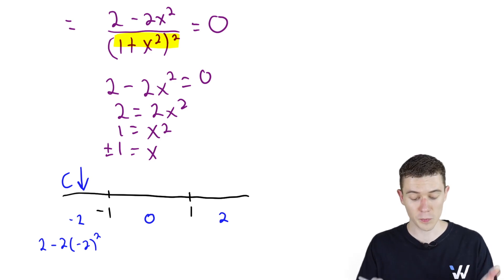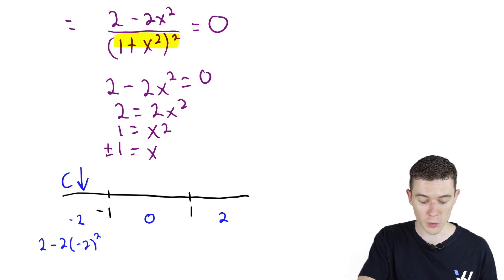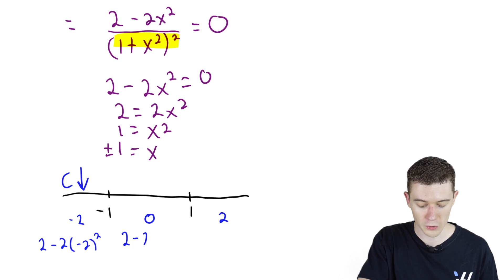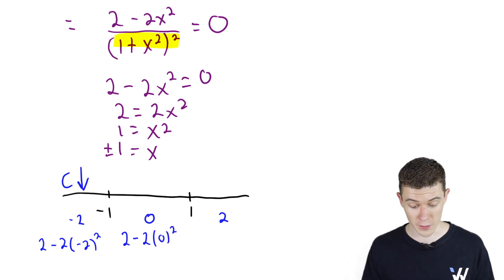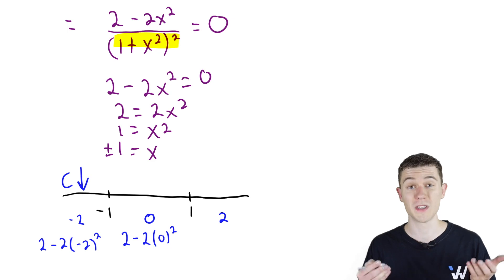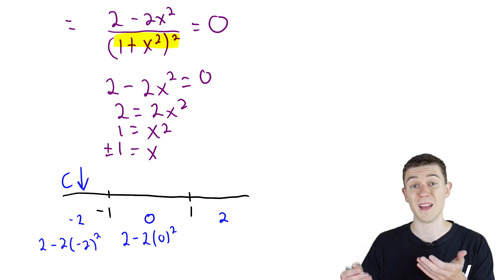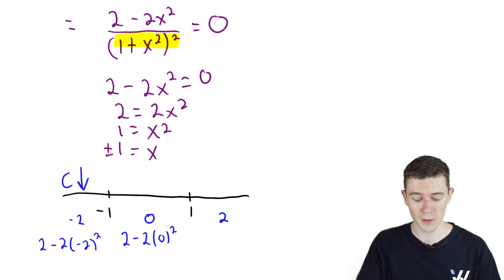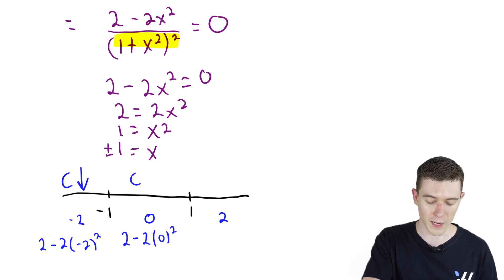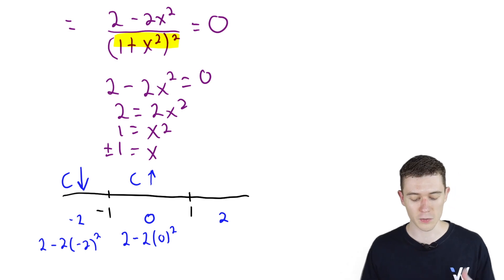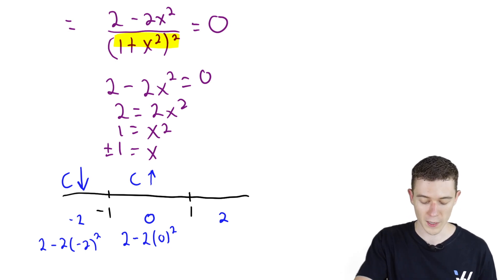If we plug in 0 to the numerator of our second derivative: 2 minus 2 times 0 squared. Zero squared is 0, so we just get 2. That's positive, which means our function is concave up on the interval from negative 1 to 1.